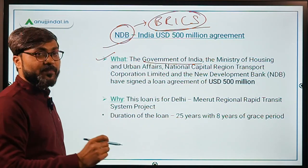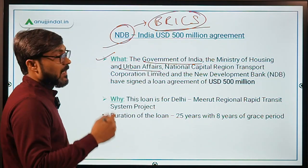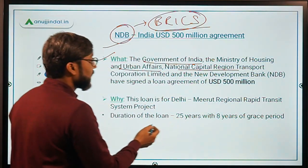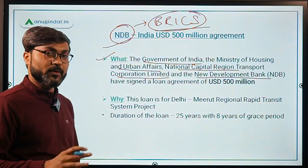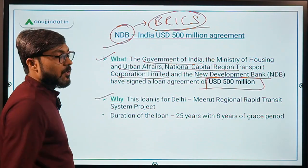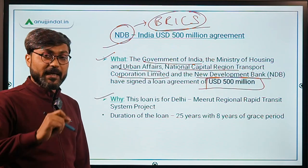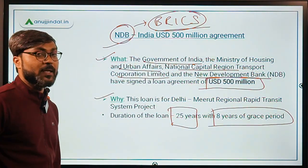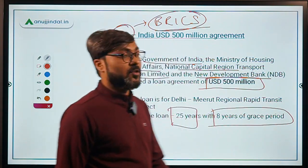This loan agreement has been signed among four parties: the Government of India, the Ministry of Housing and Urban Affairs (headed by Hardeep Singh Puri, who also heads the Ministry of Civil Aviation), the National Capital Region Transport Corporation Limited, and the New Development Bank. The loan is worth US $500 million and has a tenure of 25 years with an 8-year grace period.